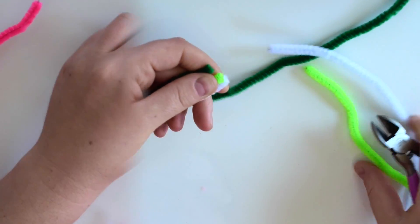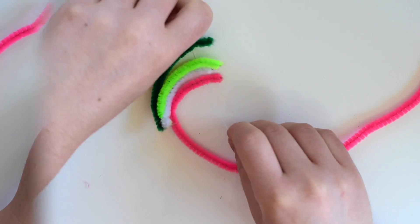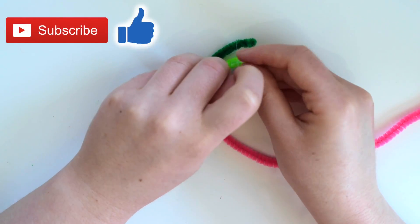I'm first going to show you how to make the watermelon, so you'll need dark green, light green, and white pipe cleaners. Cut them to the size you'd like and then shape them into a curve.